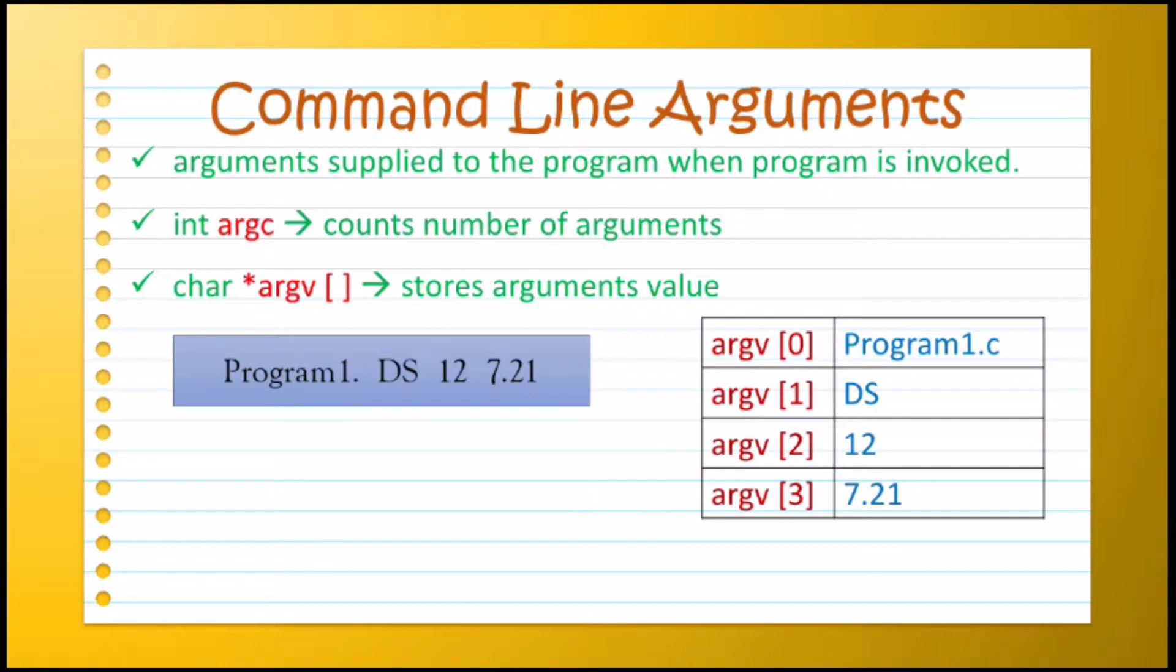It is a string, and even 7.21 is not a floating number - it is a string. So if you want to use these values as an integer or floating number, you have to convert them into their respective data type by using the type conversion method.